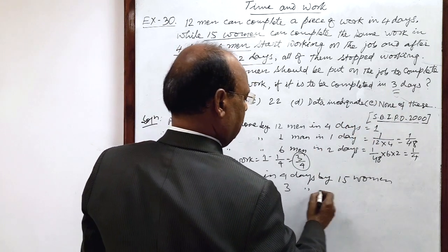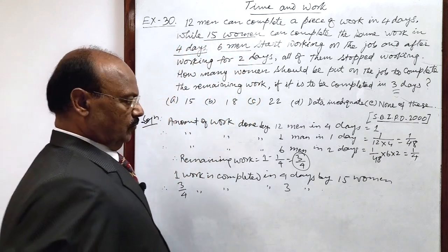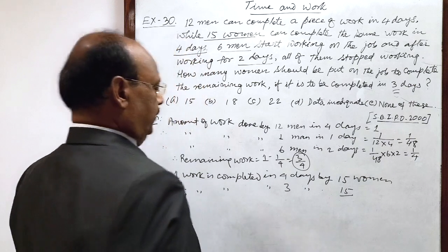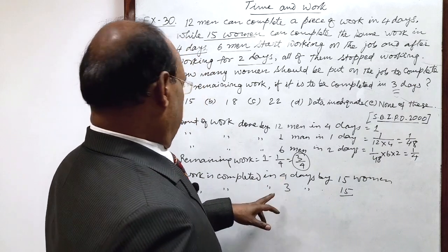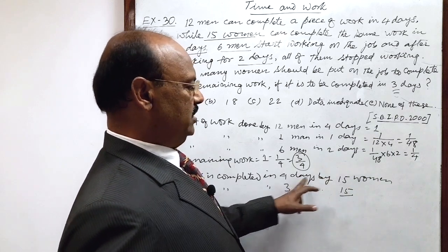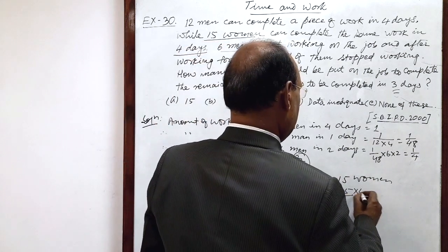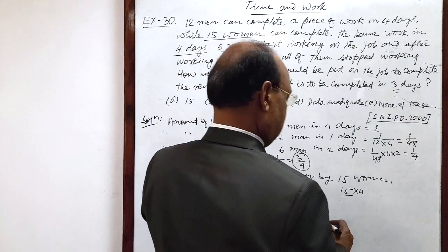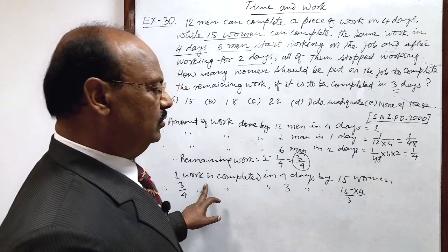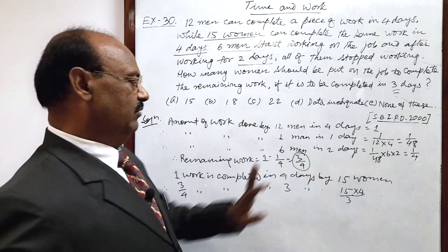We see if the number of days is less, women will be more. In 4 days, 15 women are required, so in 1 day, 15 into 4 women will be required. In 3 days, 15 into 4 by 3. If work is more, then the number of women will be more.